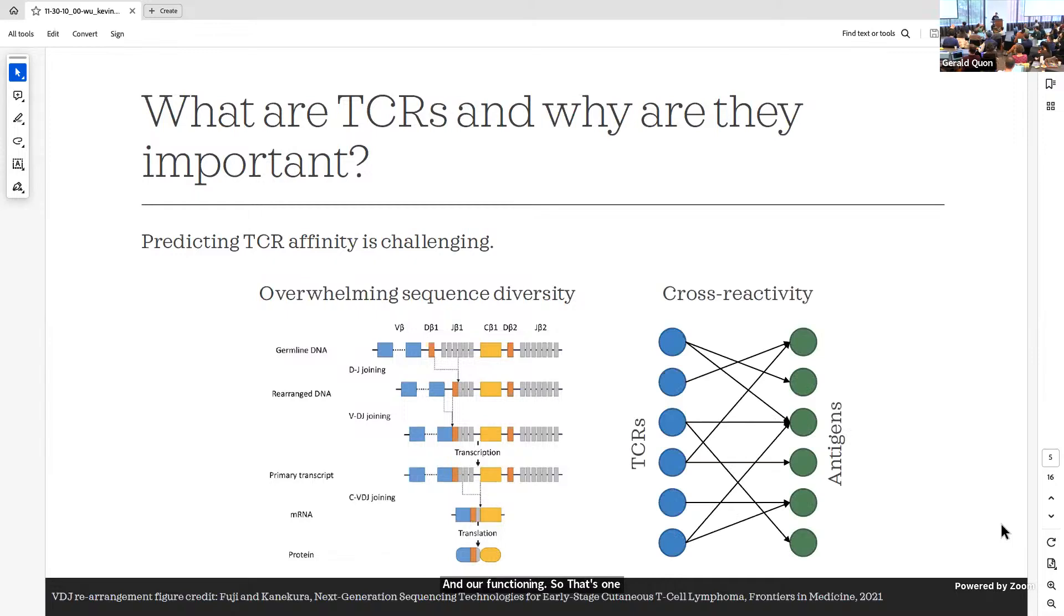The other one is that of what is called cross-reactivity, which is that there's no single clean mapping that says one TCR maps to this antigen, binds to that, recognizes that, and that's it. What we see in reality is that one antigen can be recognized by multiple TCRs, and one T-cell receptor can then recognize multiple antigens. So this very complex many-to-many mapping is much more difficult to understand from a modeling perspective.